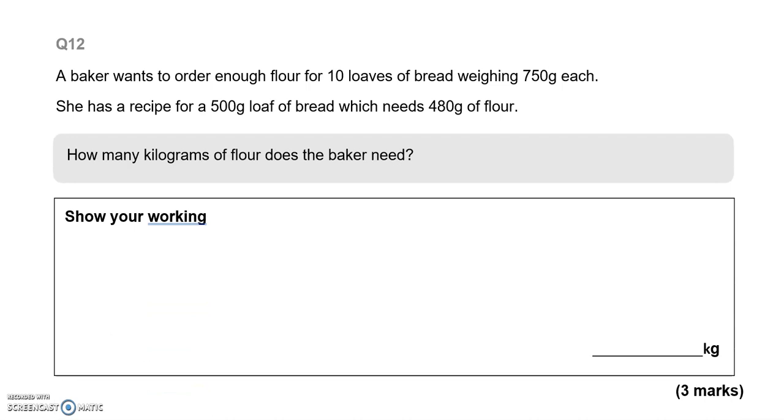A baker wants to order enough flour for 10 loaves of bread weighing 750 grams each. She has a recipe for a 500 gram loaf of bread which needs 480 grams of flour. How many grams of flour does the baker need? Show your working. First of all, how much flour does she need overall? That's 10 loaves, 750 grams each. So 750 times 10, that makes 7,500. Then we know that for one 500 gram loaf, she's going to need 480 grams of flour.